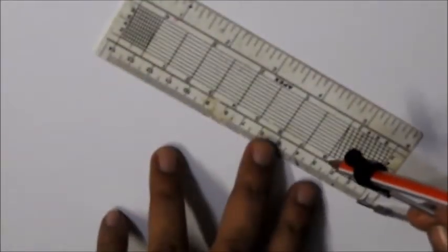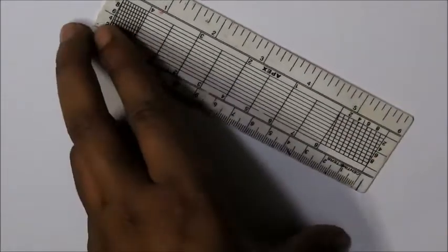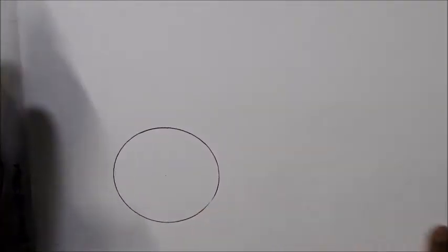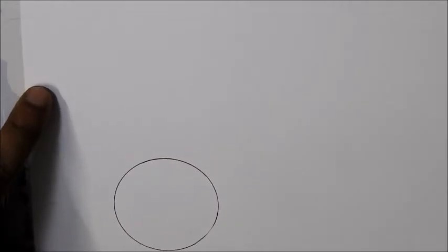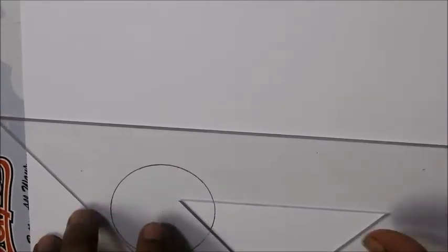First, we will make a top view. The cylinder base is 50mm diameter, so the radius is 25mm. We will make a circle of the base. Then we will draw the XY axis.